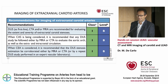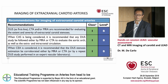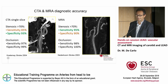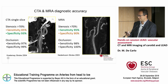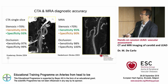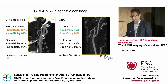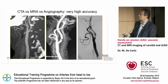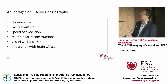In the guidelines, duplex ultrasound, CTA, and MRA are all class one recommendations for carotid arteries. The sensitivity and specificity of both CTA and MRA are very good — I would say excellent for occlusions. For severe stenosis, the sensitivity of CTA is slightly lower than MRA, but more or less you can use either technique. On average, the accuracy relative to the gold standard of angiography is very good.